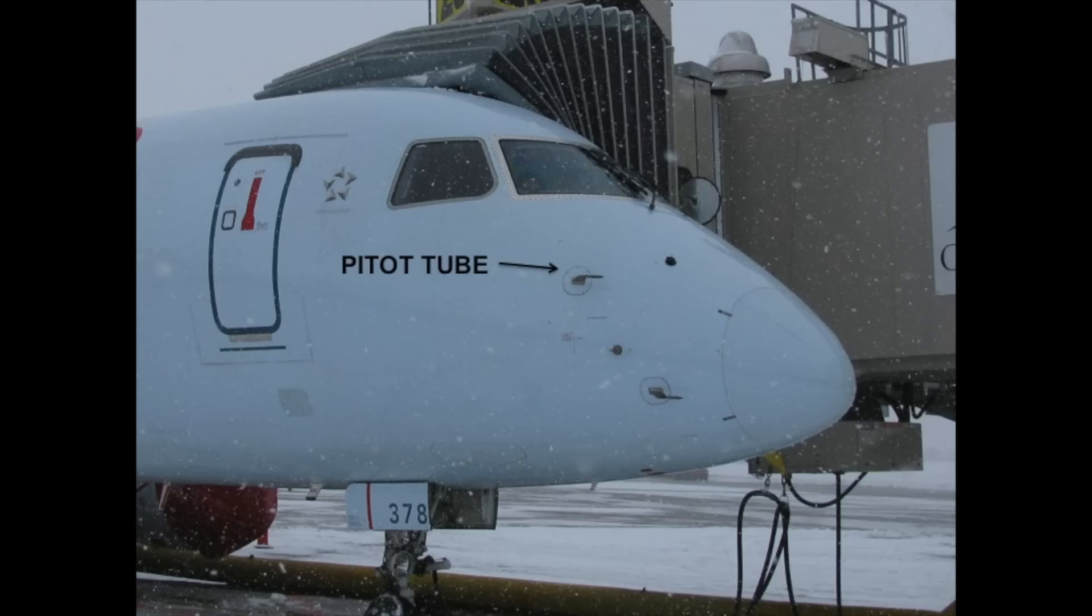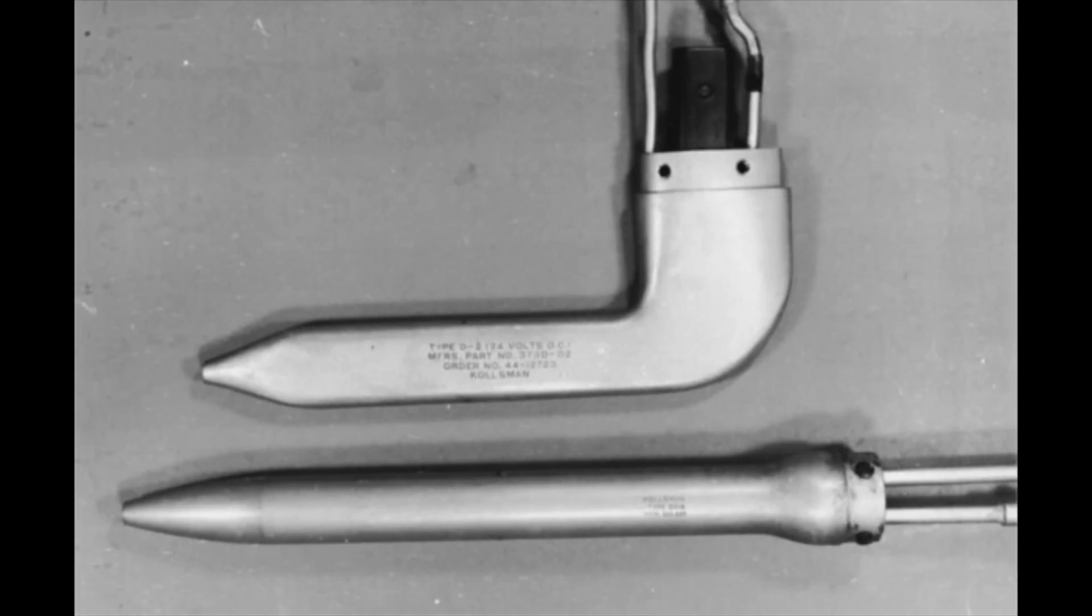The pitot, or dynamic pressure, is obtained from a tube pointing in the airstream towards the front of the aircraft. It is called the pitot tube, after its inventor Henri Pitot. Or pitot, I guess, if you try to pronounce it in English. But since it's one of the very few words I can pronounce correctly, I keep calling it pitot.